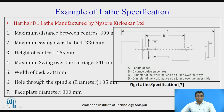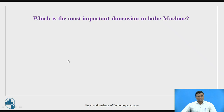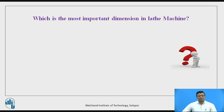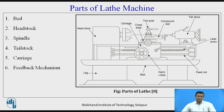Additional specifications include the weight of the bed, the hole through the spindle — the spindle where we can fix the job — the faceplate diameter; the faceplate is also one type of job holding device, with 300 mm diameter. Just consider the question: which is the most important dimension in the lathe machine? After that question, we will move towards the parts of the lathe machine.